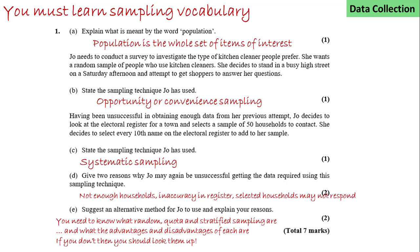What alternative methods could she use? You need to know what random, quota, and stratified sampling are, and understand the advantages and disadvantages of each. If you don't know these, you should look them up and read about them in the textbook.